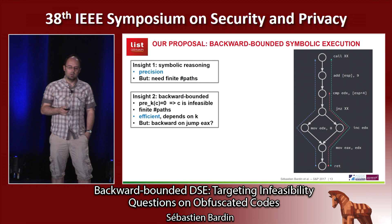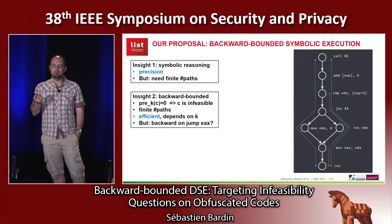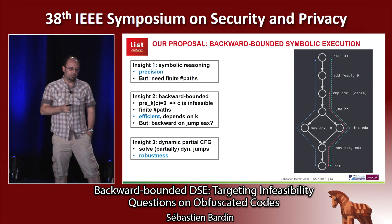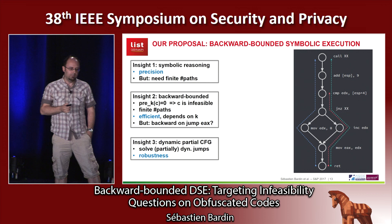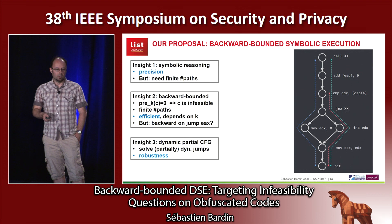There is still another problem: we need to do backward reasoning on binary. On source code, C code, it's quite easy to do backward reasoning. But on binary code, you can have dynamic jumps, encryption, self-modification — it seems very hard to go backward. This is the third insight: we first start with a dynamic partial recovery of the control flow graph, like a dynamic analysis. It will handle partial encryption, self-modification, dynamic jumps, and so on. Then we do the backward bounded reasoning. This brings robustness to the method — precision, efficiency, and robustness.